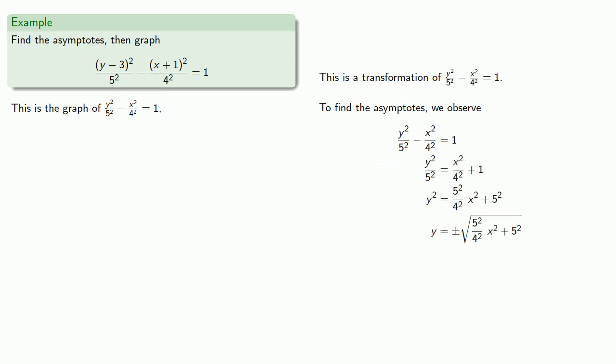And again, while this is exact, for very large values of x, the radicand becomes very similar to the first term here. And so y is approximately plus or minus 5 fourths x.